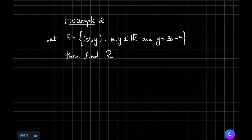For the next example, let R = {(x, y) | x, y are elements of real numbers} where y equals 3x minus 5. Find the inverse relation. We find the inverse relation by exchanging the domain and range, or the x and y axes.